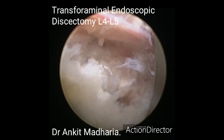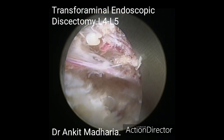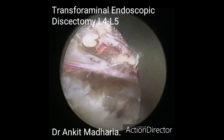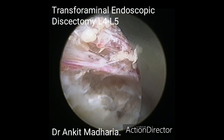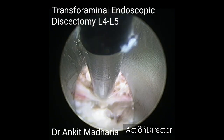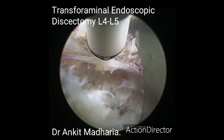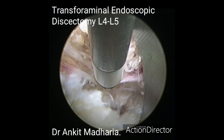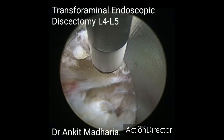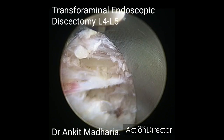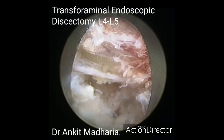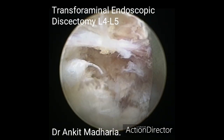Here you can see the epidural vein come into the center of our view, which will be coagulated with our radiofrequency bipolar probe. The bony structure you will see now is the superior articular process of the L5 vertebra.